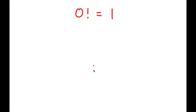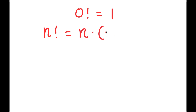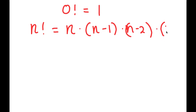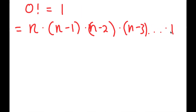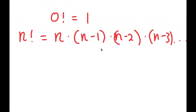In this video I'm going to be proving why 0 factorial is equal to 1. To get the factorial of a number n, this is equal to n times n minus 1 times n minus 2 times n minus 3 and so on and so forth until you reach 1. That is what the factorial of a number n is. Now let's try this with 5 factorial.